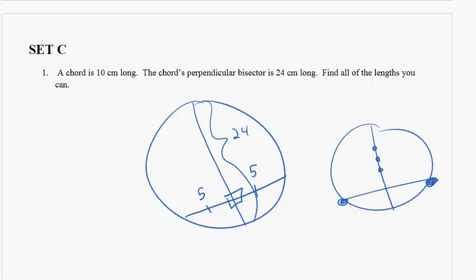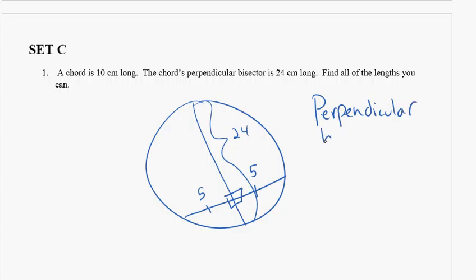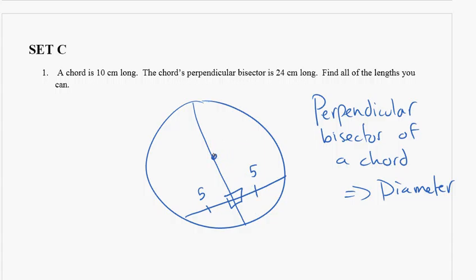So if we know that this perpendicular bisector is 24, we know the diameter is 24. Any perpendicular bisector of a chord is the diameter. So that means the radius is 12. Which means if we draw in these strategic radii here, we know that these are 12.